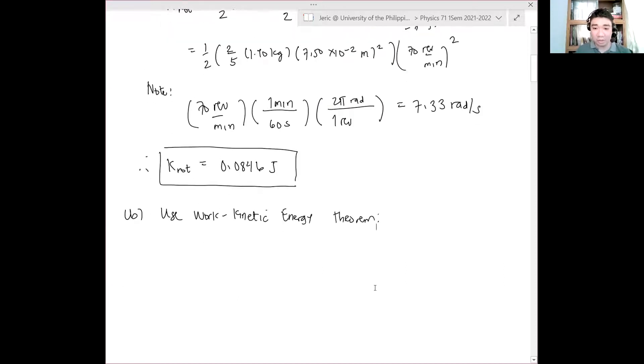That is, the work gives you the change in the kinetic energy. But this is simply what? One half I—remember, the moment of inertia doesn't change, at least for our system. It can change sometimes, but for now it doesn't change. So, I omega f squared minus one half I omega i squared, where omega i is the initial angular velocity and omega f is the final angular velocity.